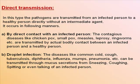Direct transmission occurs in the following manners: by direct contact with an infected person — contagious diseases like chickenpox, smallpox, measles, leprosy, and ringworm are transmitted by actual bodily contact between an infected and a healthy person. Droplet infection: diseases like common cold, cough, tuberculosis, diphtheria, influenza, mumps, and pneumonia can be transmitted through mucus secretions from sneezing, coughing, spitting, or even talking of an infected person.